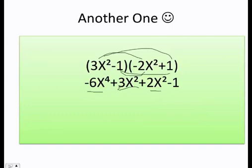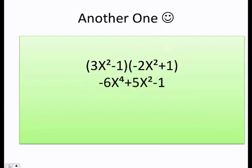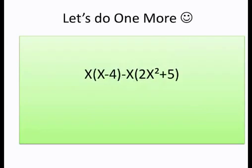Finally, I can go ahead and only add the like terms. In this case, 3x squared and 2x squared. And bingo, I get my final answer. Awesome. Let's do one more. Here, it's a little bit different. So the first thing you need to do is to take care of the parentheses.